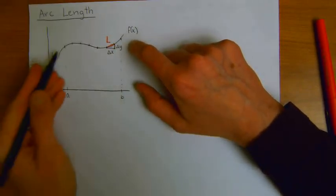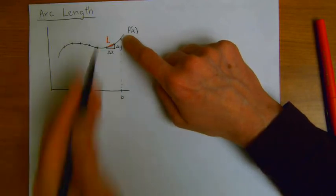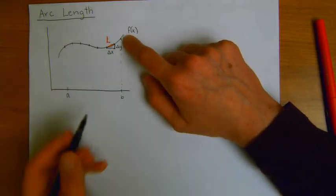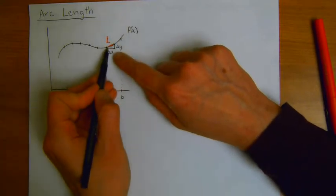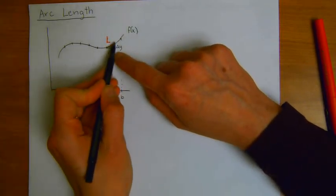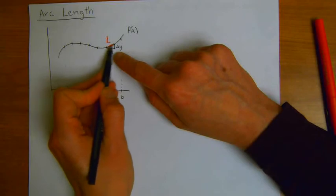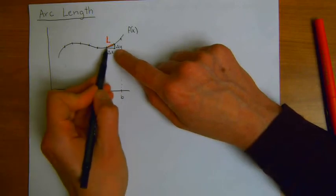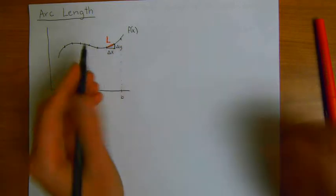So I just broke this line segment up into a lot of little pieces, and then looking at one little segment, I see that the length L, if I connect it as a straight line between the two endpoints here, the length is going to be given by Pythagorean theorem.